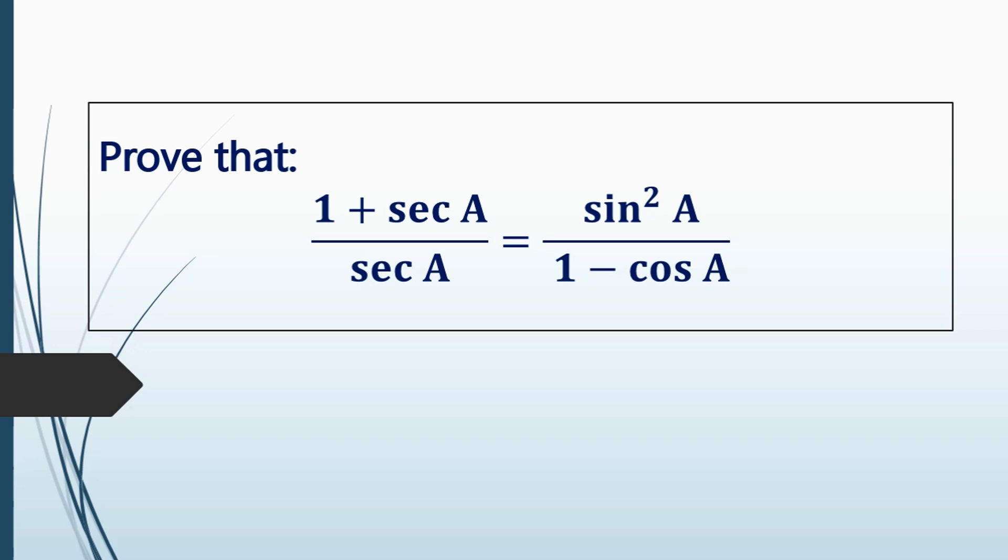Trigonometry. Prove that (1 + sec A) / sec A = sin²A / (1 - cos A).